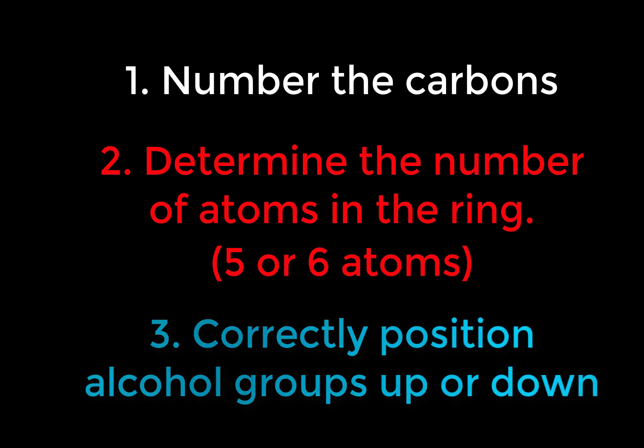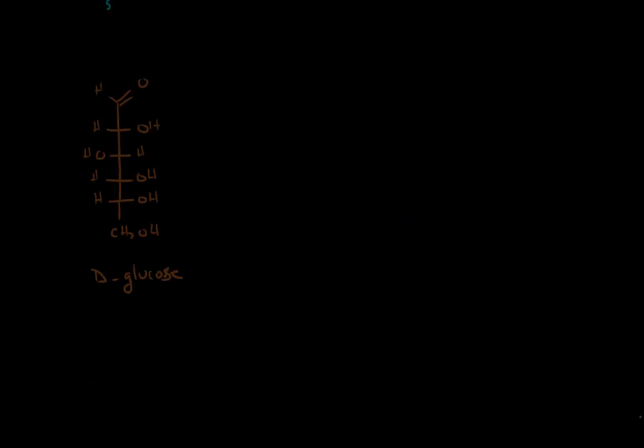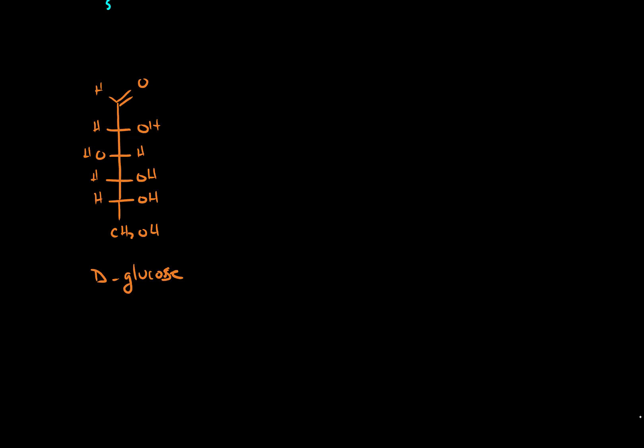Let's see this with D-glucose. So here D-glucose we see now has six carbons. Let's start off by numbering it. This is carbon one, two, three, four, five, and six.